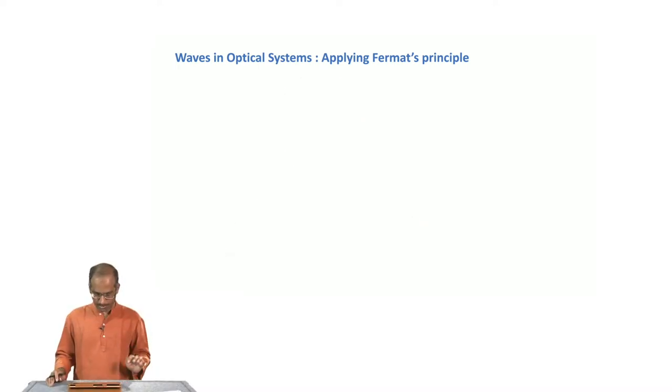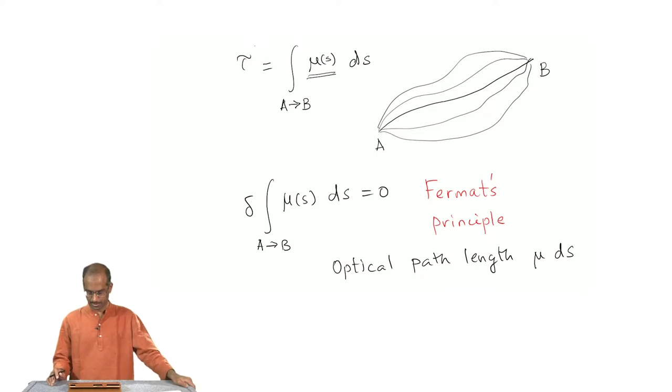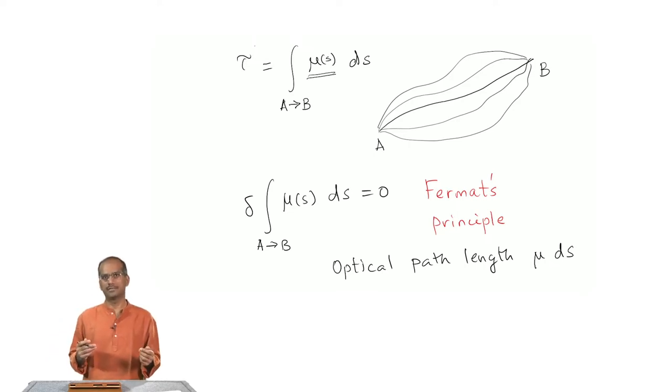To begin with let me remind you of Fermat's principle. The principle simply states that the actual path taken by the light is the one for which the optical path is an extremum. In the standard simple case of a homogeneous medium and light traveling from point A to point B, it is equivalent to saying that light takes the shortest path between those two points. In this case it would be a straight line.